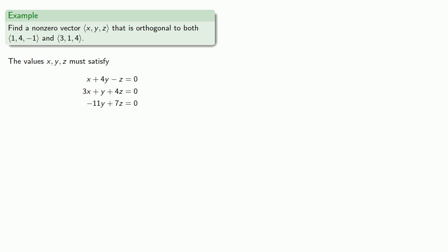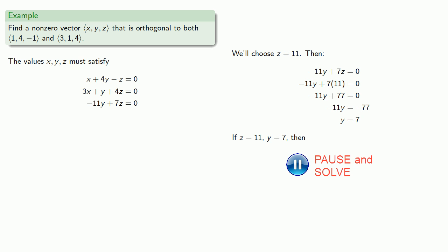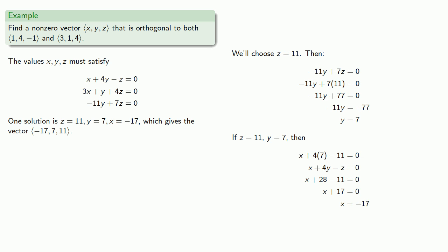So let's choose something else. And here's something that will work. We'll choose z = 11. Why 11? Well, notice that our coefficient of y is -11. And that means at some point we're going to be dividing by 11 to solve for y. Choosing z = 11 helps us avoid fractions. So if z = 11, we can solve the first equation for y. But now we know z is equal to 11, y is equal to 7, so we can solve our first equation for x. And that gives us a value of x, y, and z. And consequently, we have our orthogonal vector.